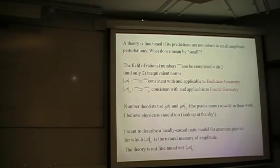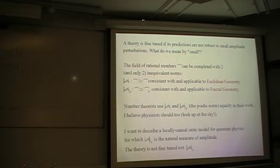Number theorists use both of these norms almost equally in their work. Andrew Wiles' proof of Fermat's last theorem made essential use of the p-adic norms to define solutions over diophantine equations. I believe physicists should also start thinking about the application of these norms too. Just look up at the sky on a day when there are cumulus clouds and you'll see fractal structures in the clouds. P-adic norms are very natural measures of amplitude with which to study those types of geometries.